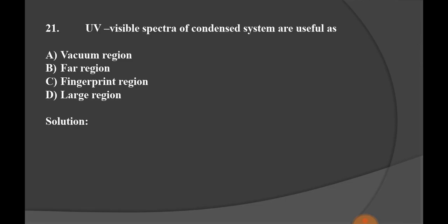Let us start from question number 21. UV visible spectra of condensed system are useful as: Option A vacuum region, B far region, C fingerprint region, and D large region. UV visible spectra of condensed system are useful as the fingerprint region. Option C is the right option.